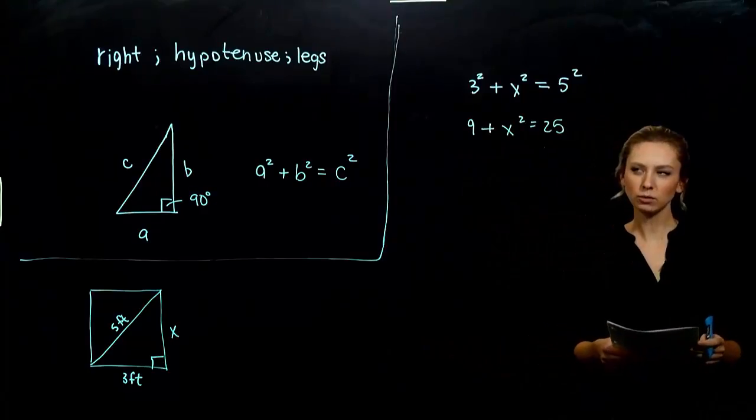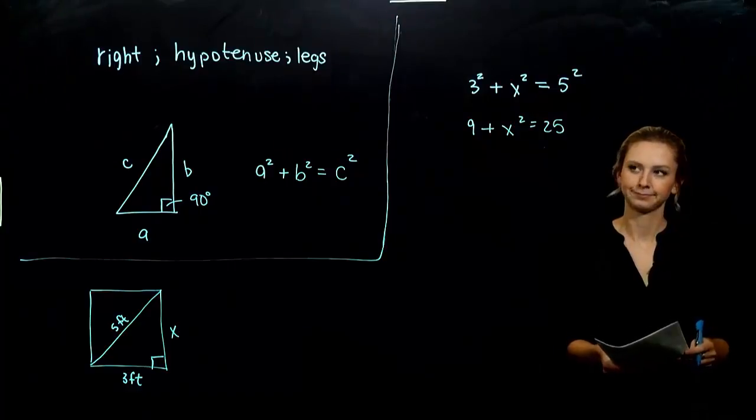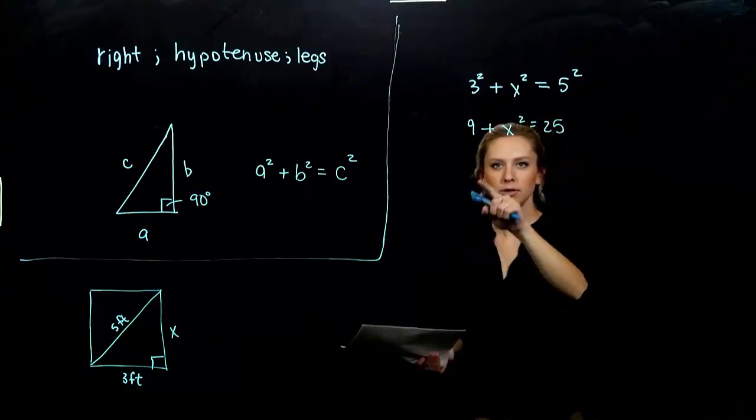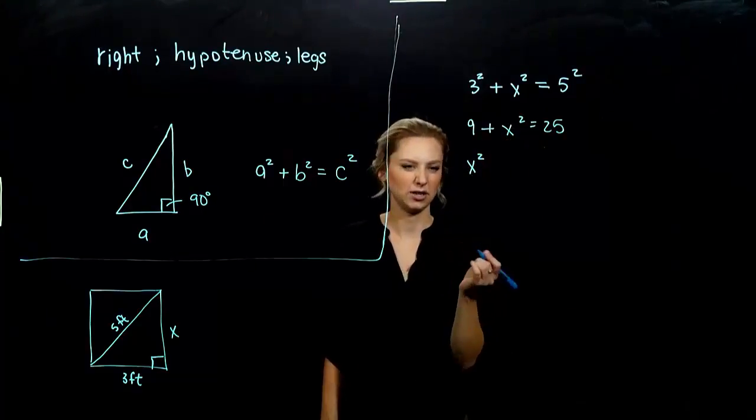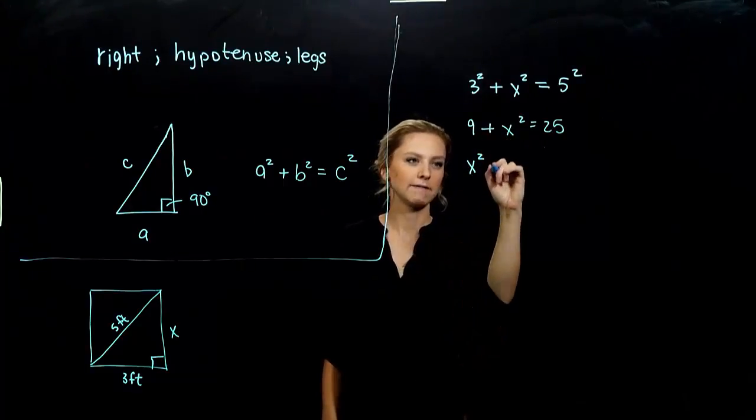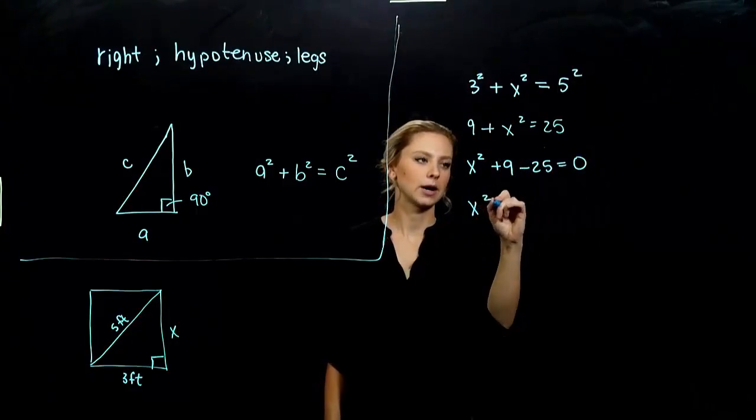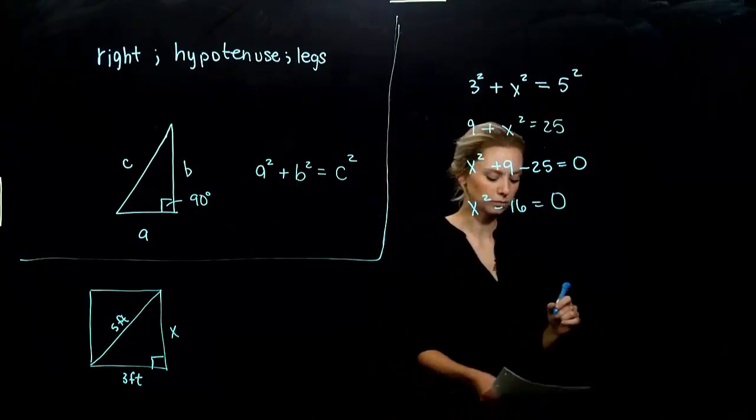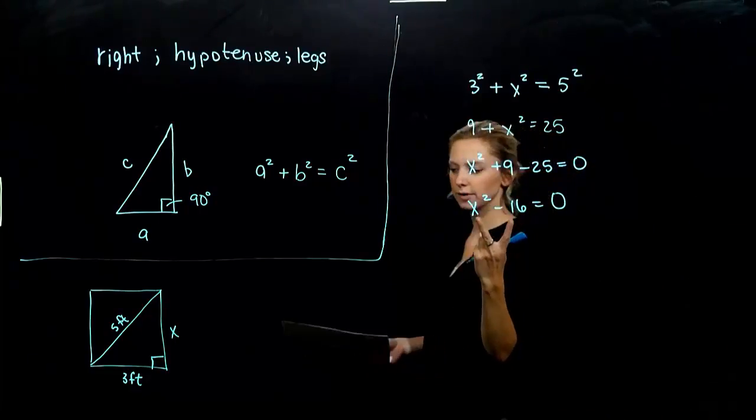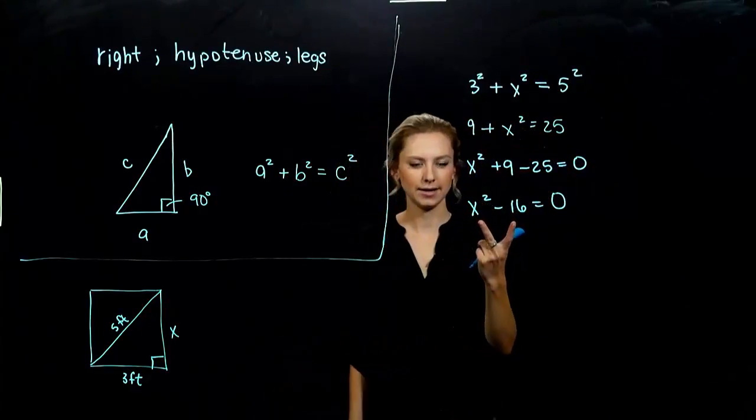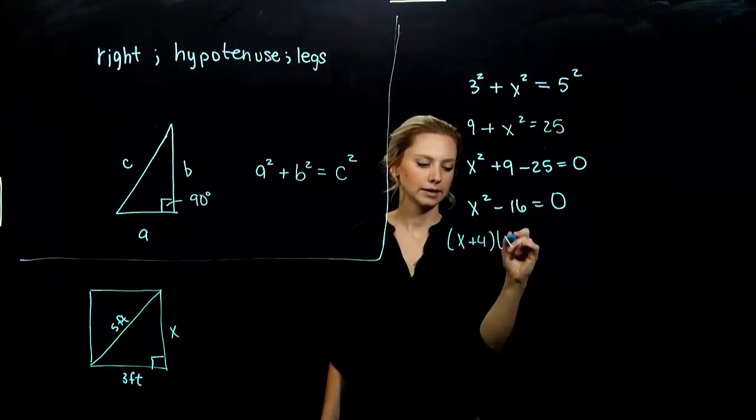We need everything on one side equal to zero. I want to move 25 to the left since my x² is already positive. I'm going to write that first because I like to see the variables come first. I've got x² + 9 - 25, so x² - 16 = 0. We need to factor. Is it a difference of squares? And it is. It factors into (x + 4)(x - 4).